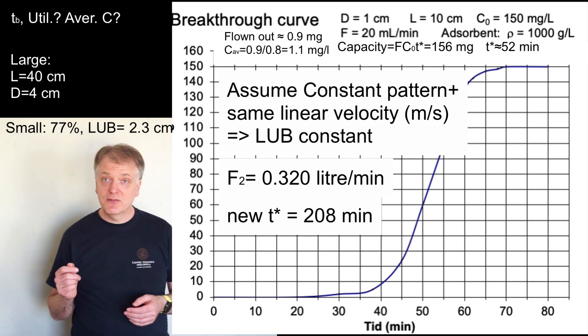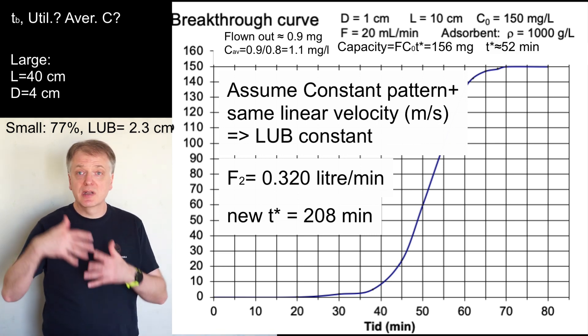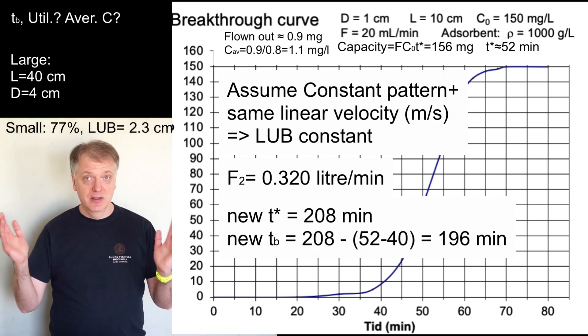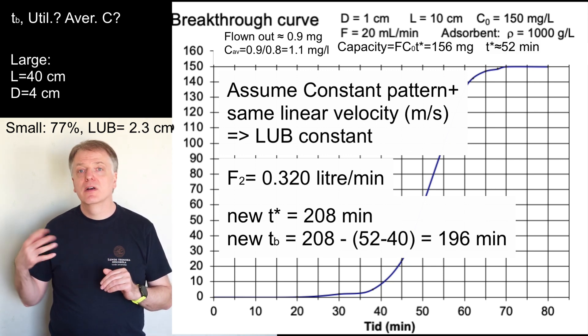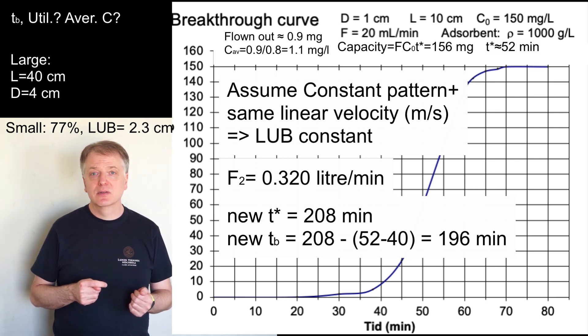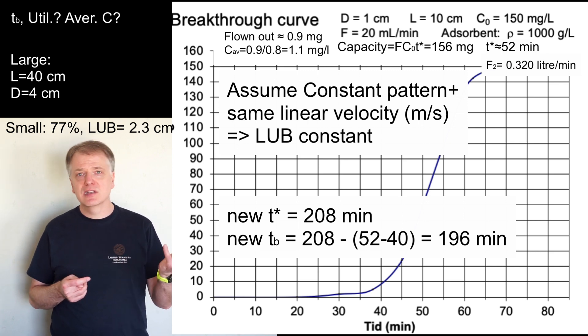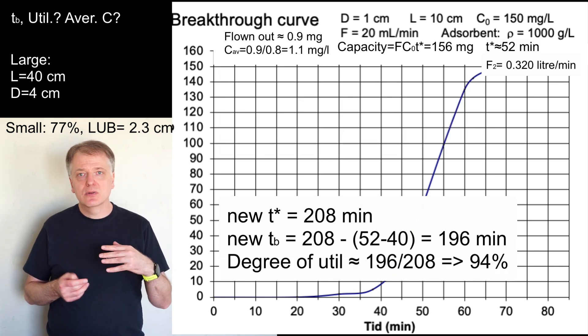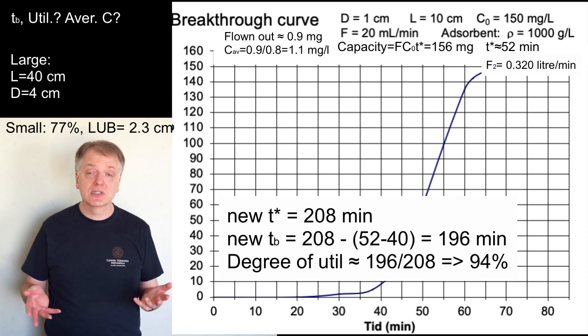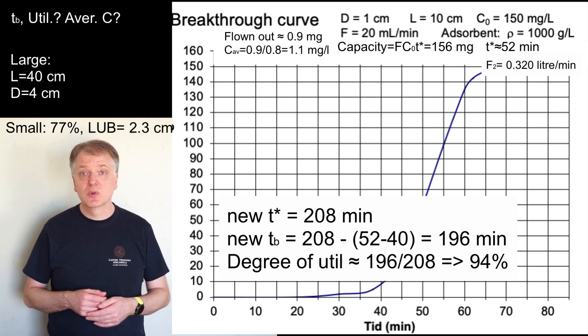Since the difference between T star and TB is constant our new breakpoint is 208 minus 52 minus 40 or 196 minutes which gives an approximate degree of utilization of 196 divided by 208 or 94 percent, much larger than the 77 percent we got for the small column.